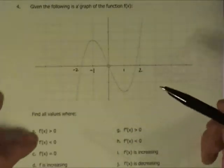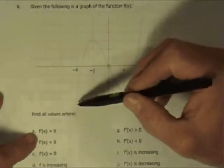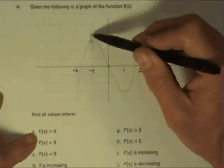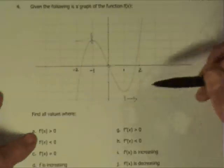So, find all the values where the derivative is greater than 0. That's really asking where is the tangent slope going to be positive. Well, that's going to be in this region right here that will be positive, and then also from this region on out.